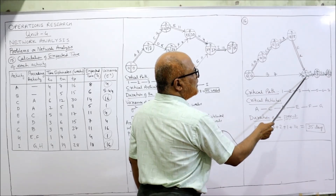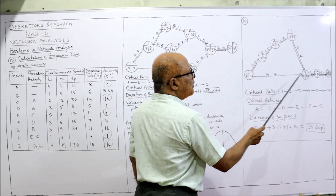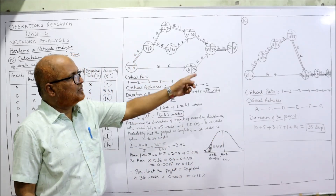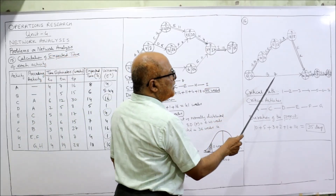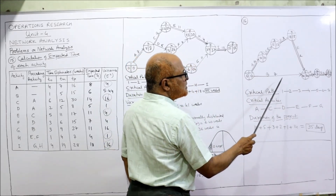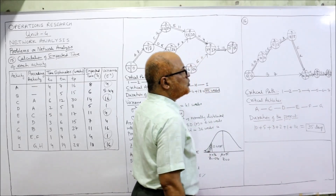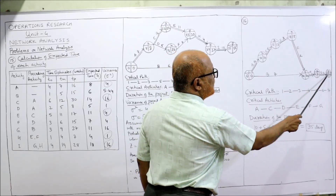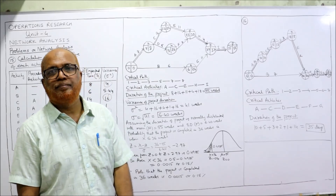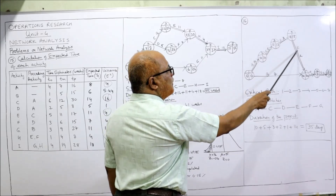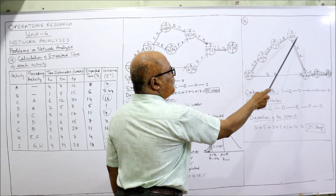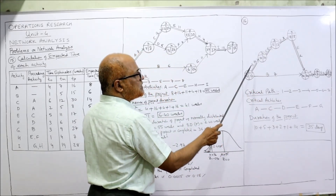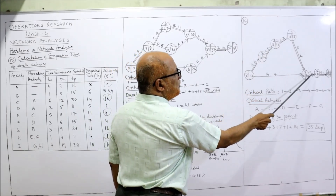Continuing the backward pass: 21 − 1 = 20. Two arrows bursting — take the minimum: (10 − 10 = 0) vs. (20 − 7 = 13) — 0 is less. The critical path is the longest path where EST and LFT values are the same. Looking at the path through events with values 0, 10, 15, 18, 20, 21, 35 — this is the critical path as it is the longest path. Show the critical path with double lines. Critical path: 1 → 2 → 3 → 4 → 5 → 6 → 7. Critical activities are A, C, D, E, F, G. Duration of the project: 10 + 5 + 3 + 2 + 1 + 14 = 35 weeks.